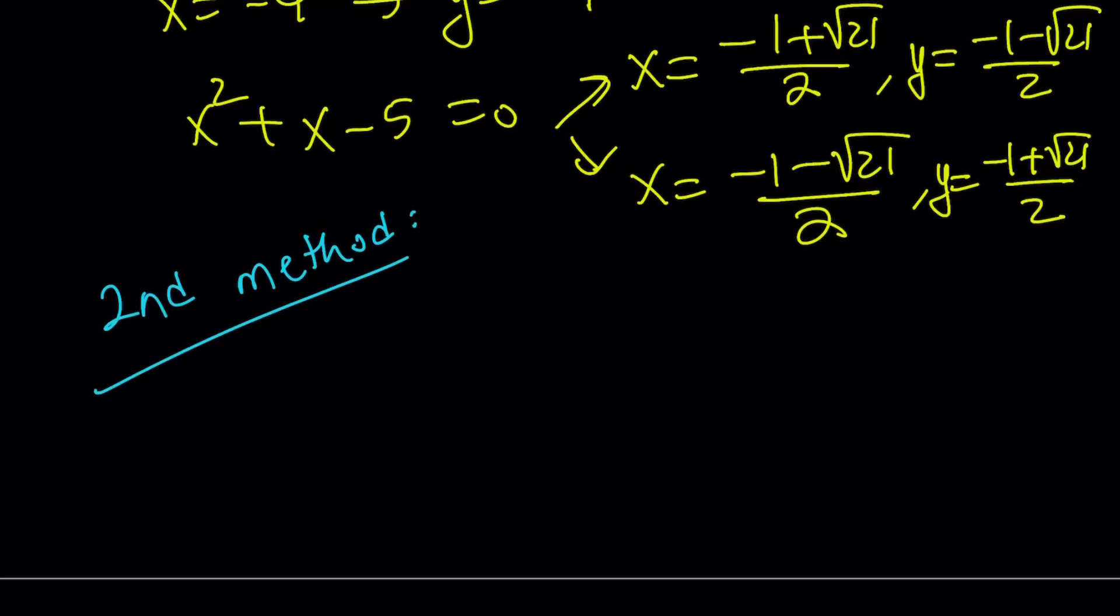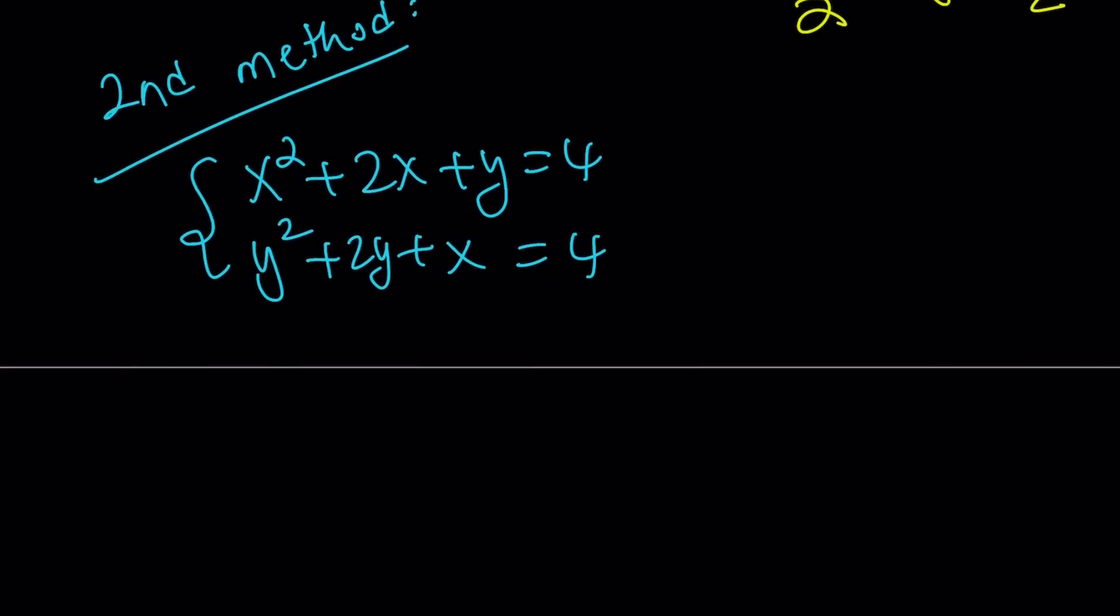Second method. For my second method, I'm going to be doing the following. Let me rewrite the original equation. x squared plus 2x plus y is equal to 4, and y squared plus 2y plus x is equal to 4. Since both of these equations are equal to 4, I can set them equal to each other. Because if two things are equal to each other, then they're equal. So x squared plus 2x plus y equals y squared plus 2y plus x.